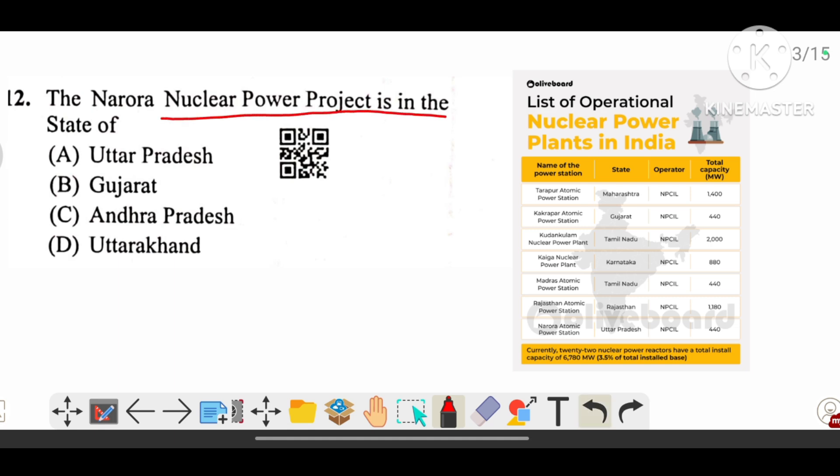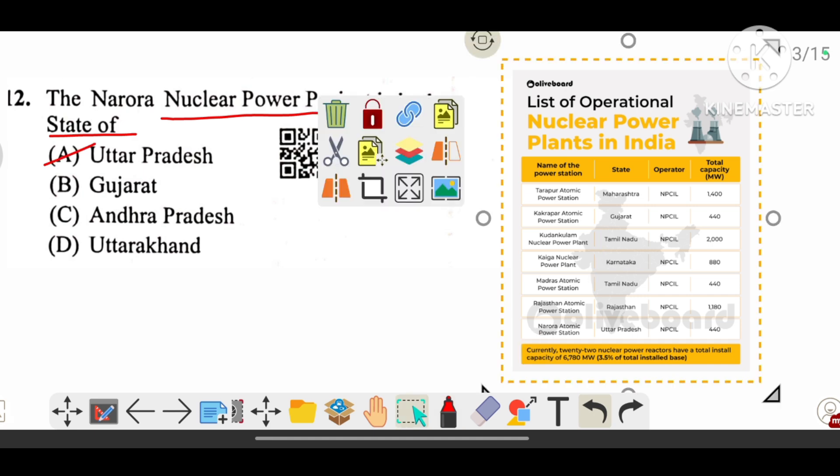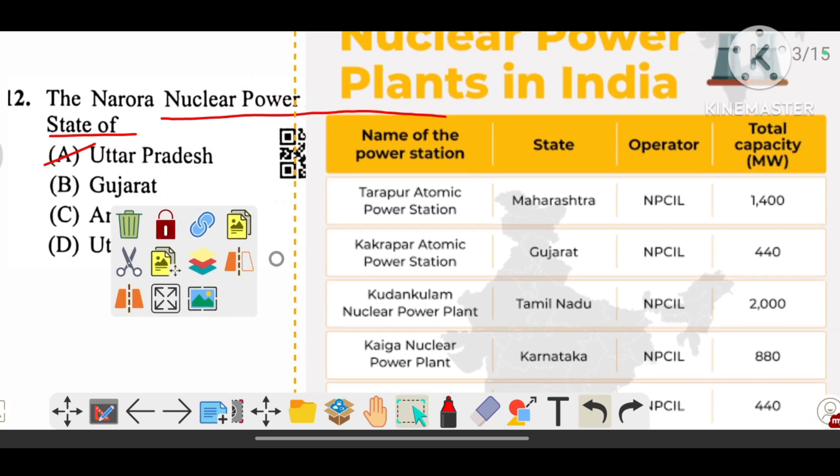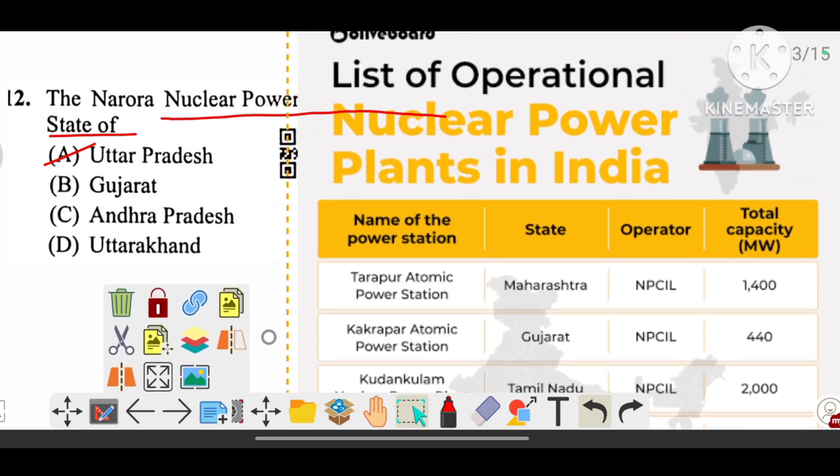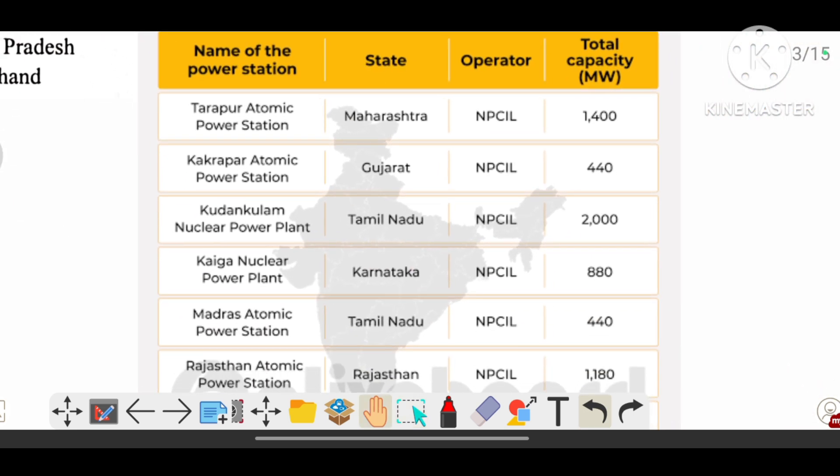The answer is A, that is Uttar Pradesh. These are the list of the nuclear power plants in India: Tarapur that is in Maharashtra, Kakrapar that is in Gujarat, Kundakulam that is in Tamil Nadu.